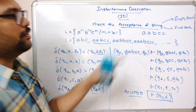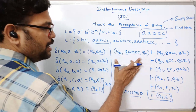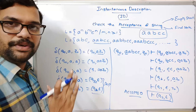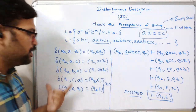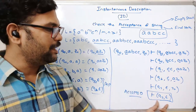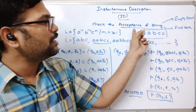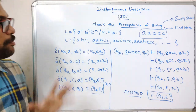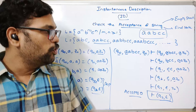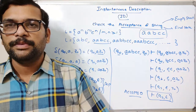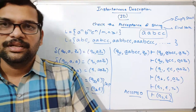The string 'aabcc' is accepted by the PDA. This ID is computed using the transition functions — first we calculate the transition functions and then check whether the string is accepted. After processing the complete input, the stack is empty, so the string is accepted. This is the process of instantaneous description for acceptance of a string by the PDA. Feel free to post doubts in the comment section, like and share the session, and don't forget to subscribe. Thank you.